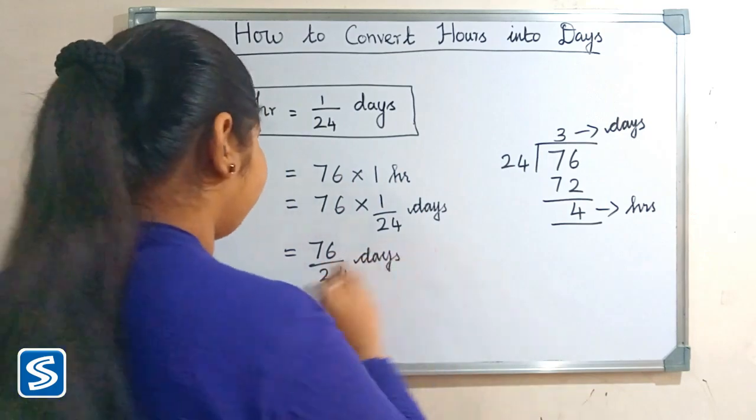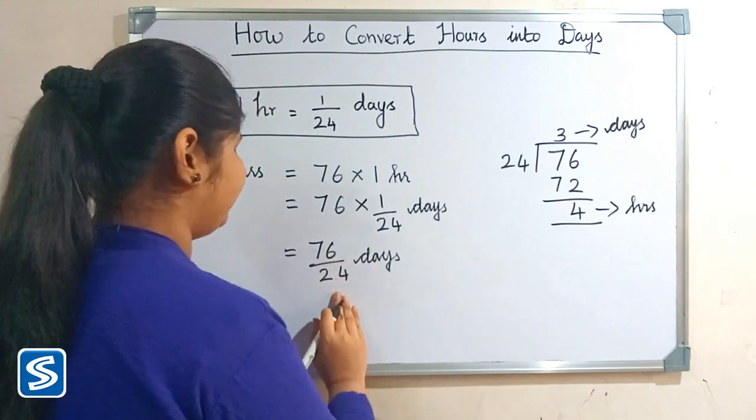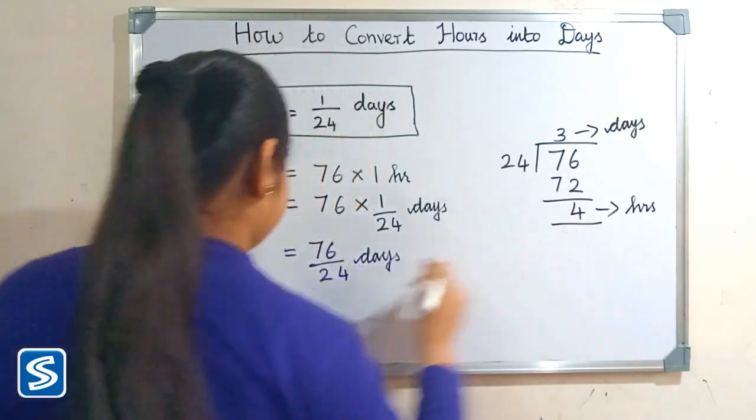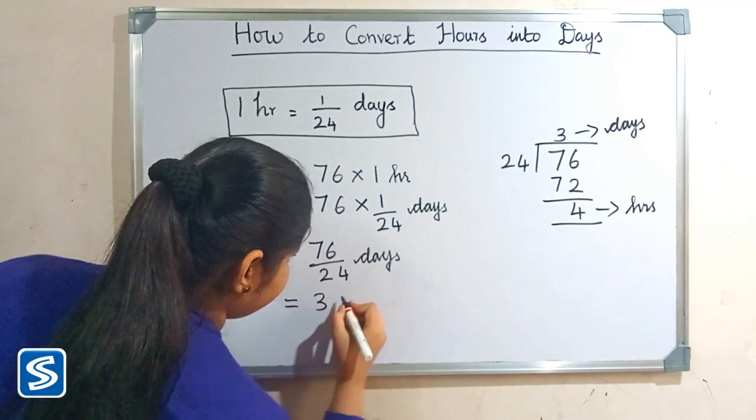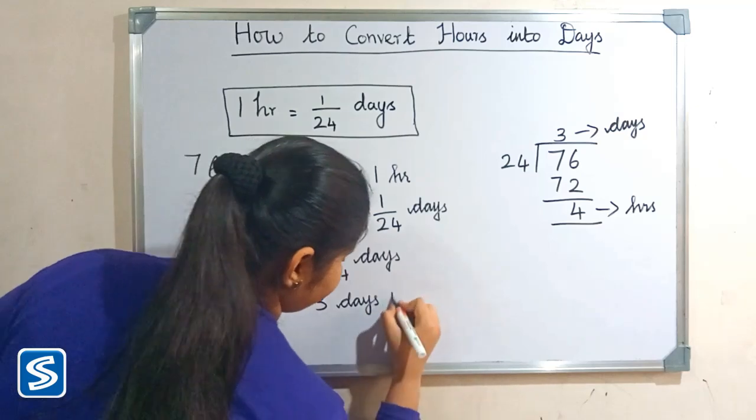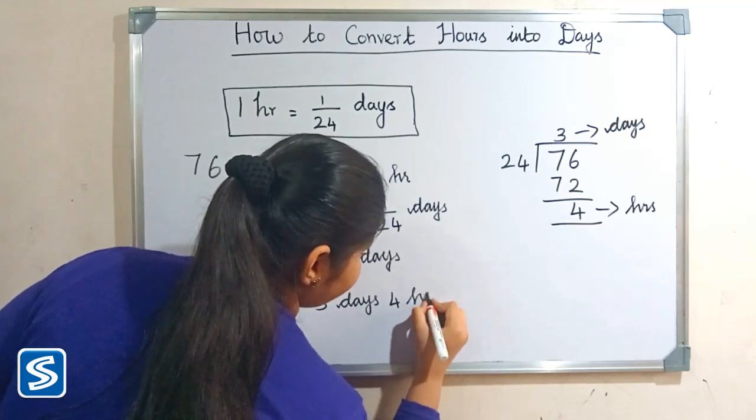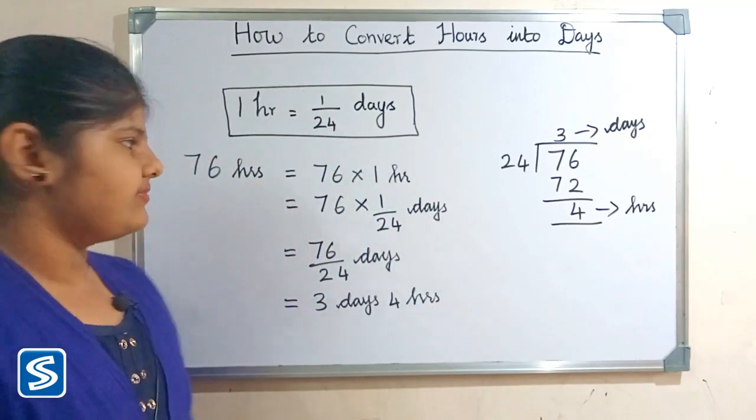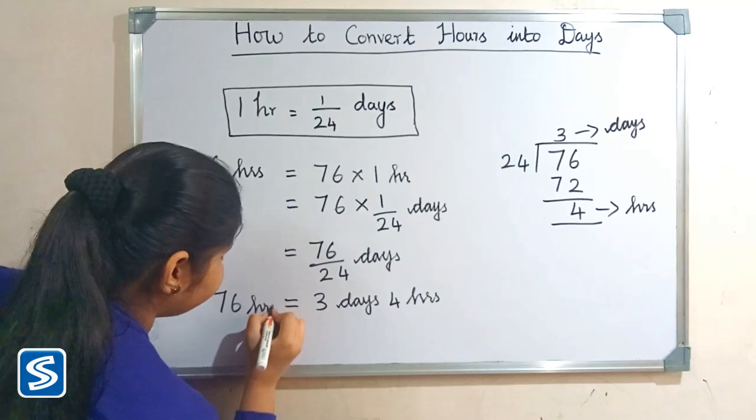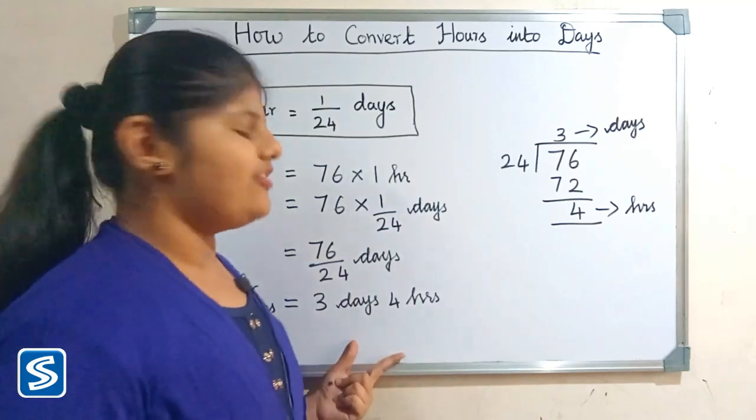So when we divide 76 by 24 days, our answer will be 3 days 4 hours. So 76 hours is equal to 3 days 4 hours.